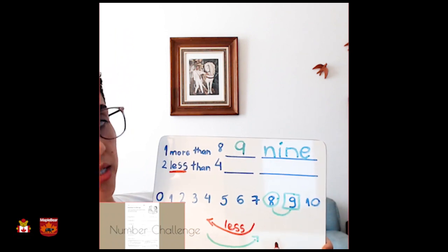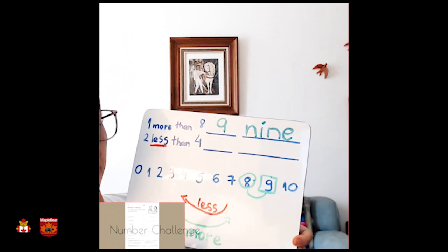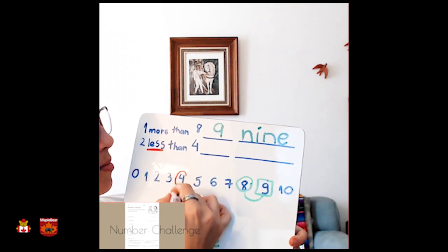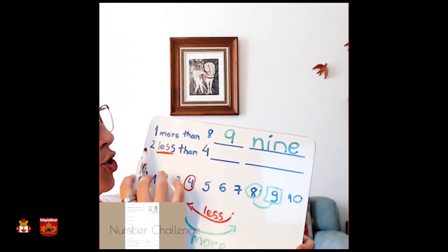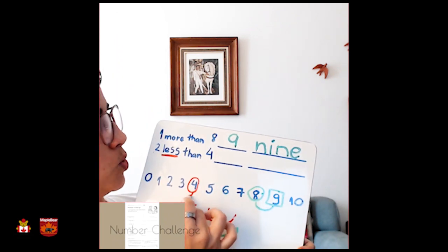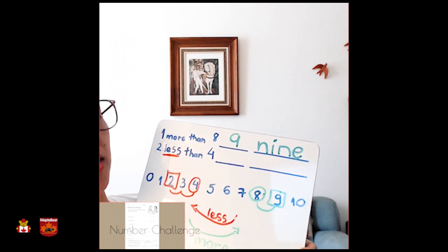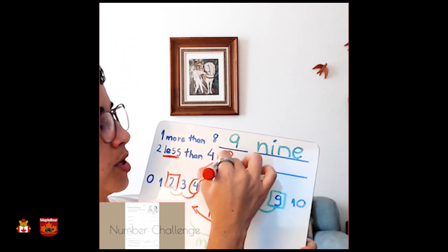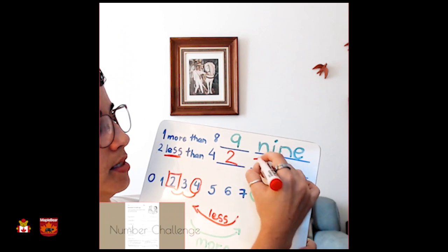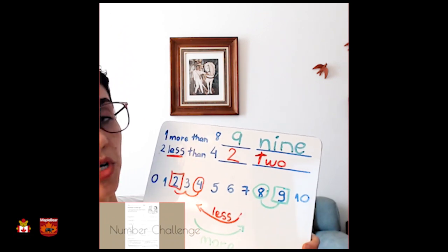Where's the number four? See if you find it. Do you? Here is number four. Two less. It means that we jump two times. One, two. What do we have here? Two. So, write the number two and the word two. Very good.